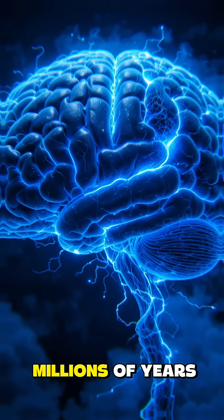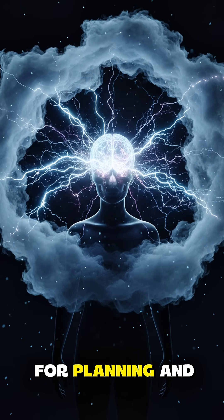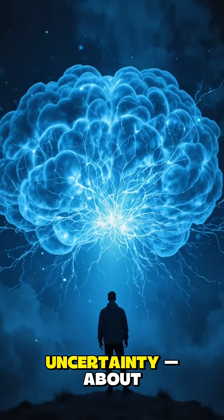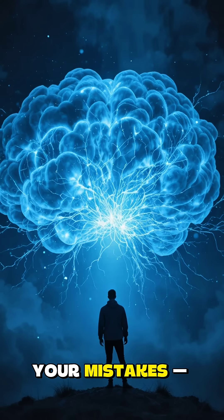A survival mechanism millions of years old. It all starts in your prefrontal cortex, the part of your brain responsible for planning and decision-making. When you sense uncertainty about your future, your relationships, your mistakes, this part goes into solve mode.